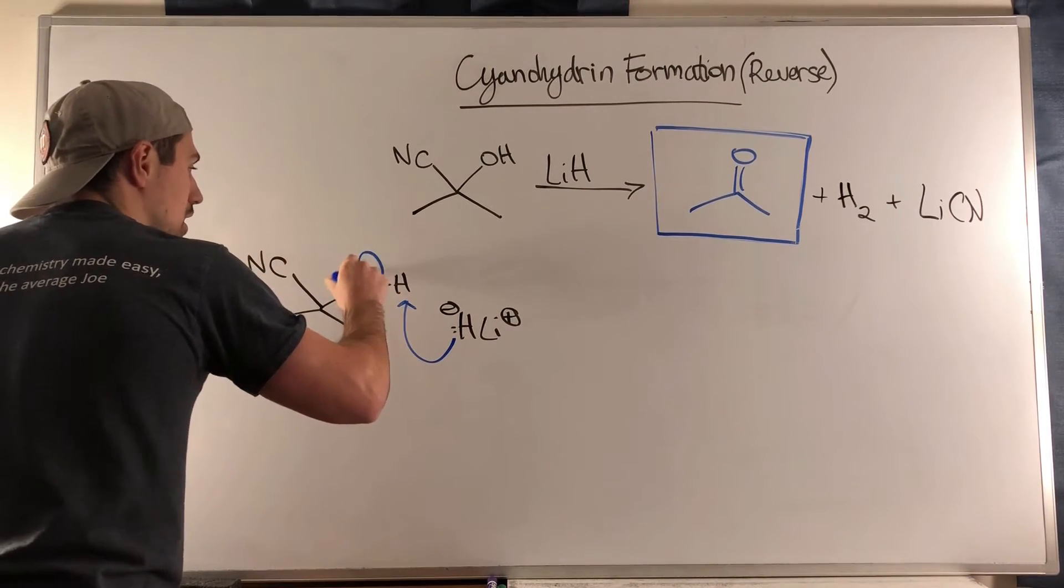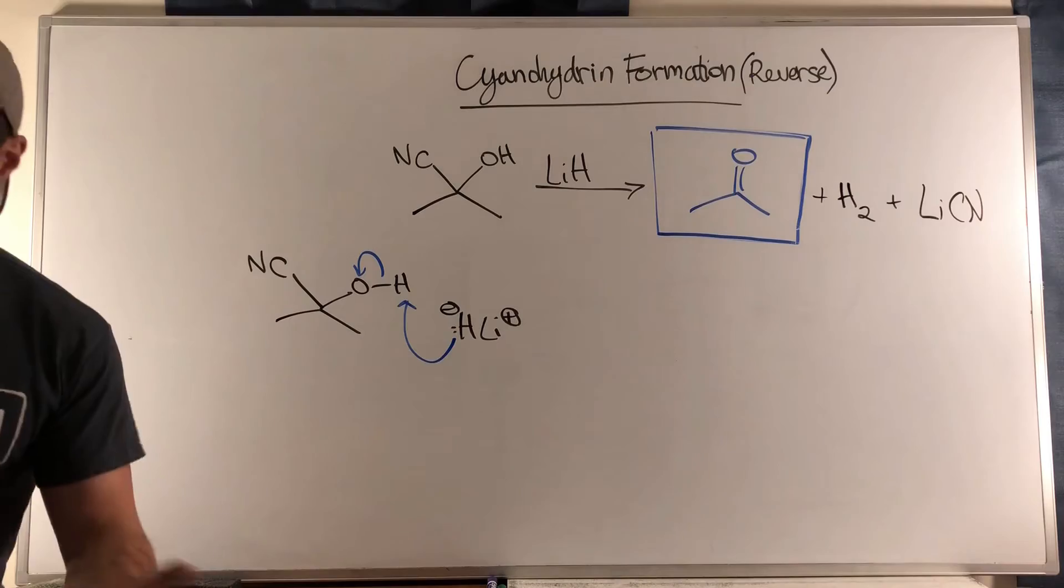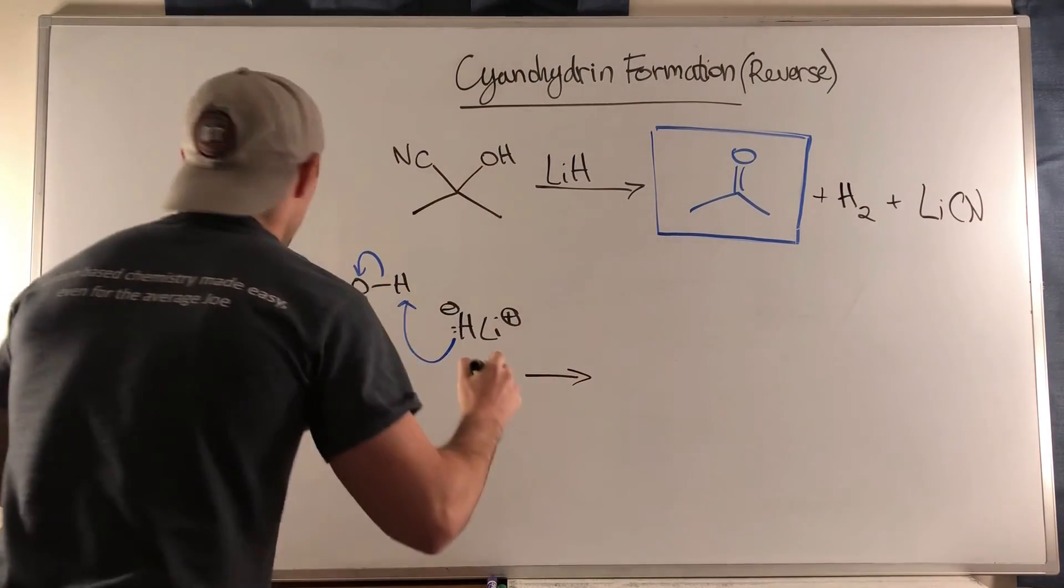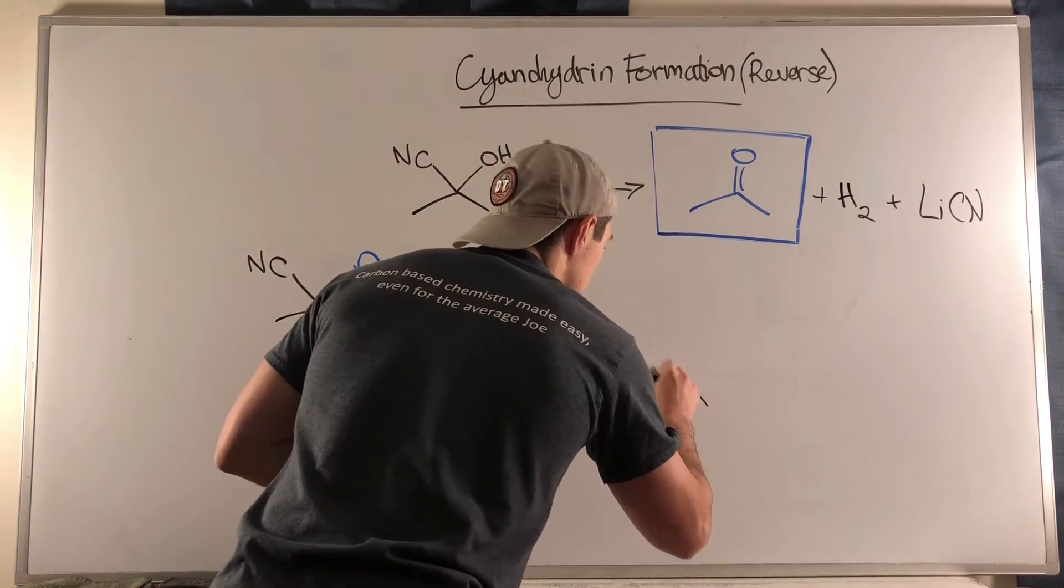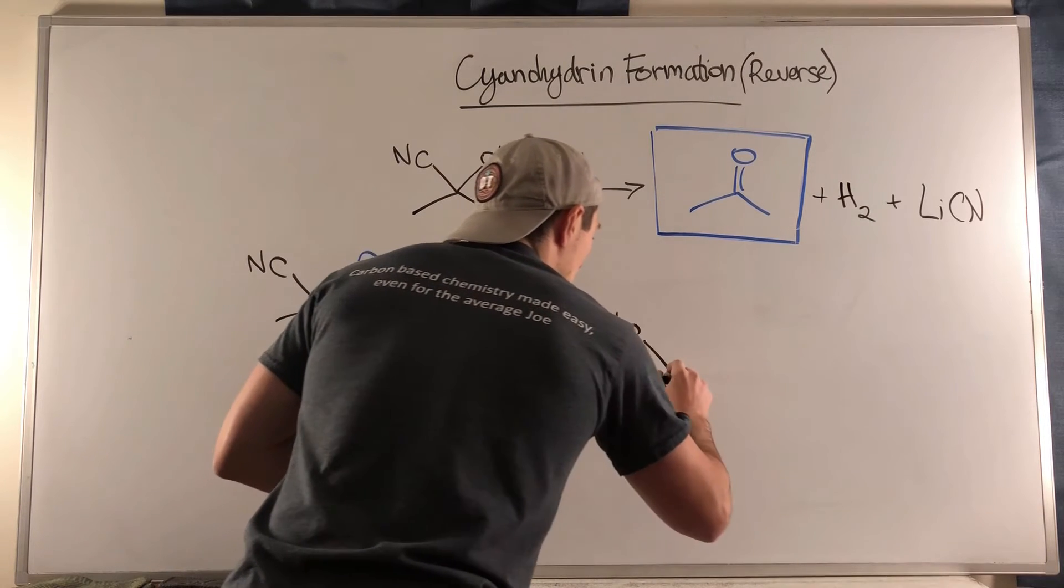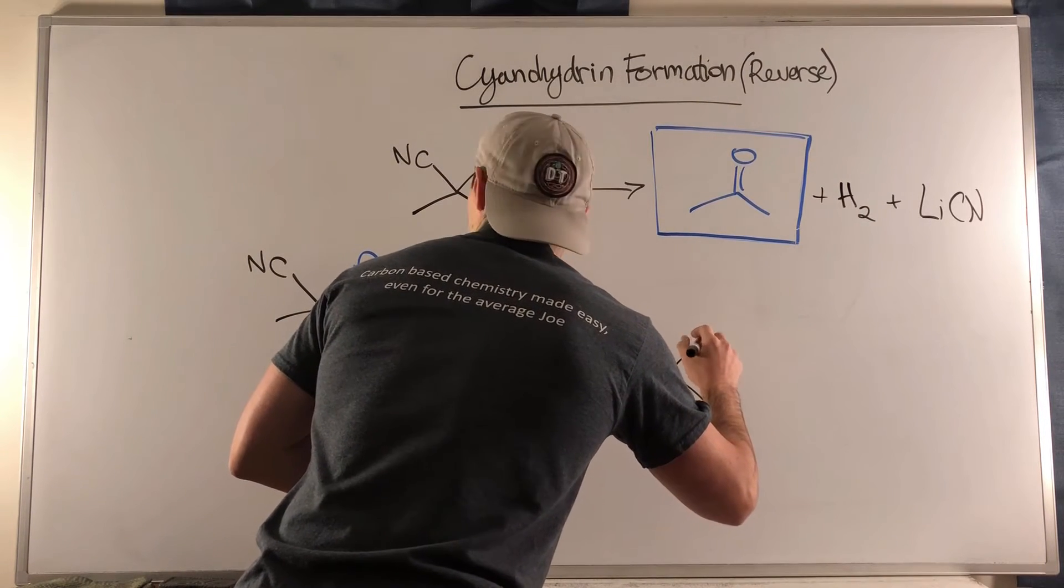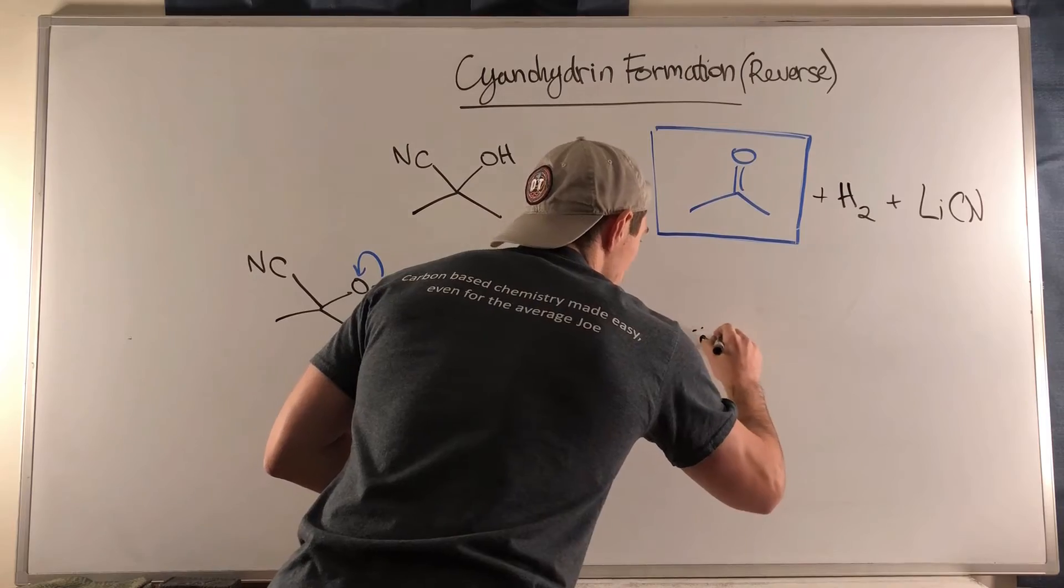Once that happens, I think you're going to see the very familiar piece that will allow us to kick off our CN, the nitrile piece of our cyanohydrin. Now that we have this O minus, what's going to happen is we will swing down, reform our carbon-oxygen double bond.